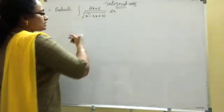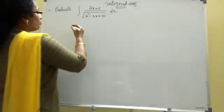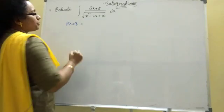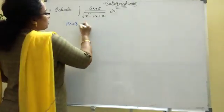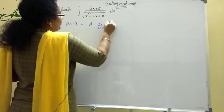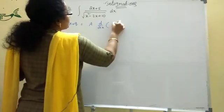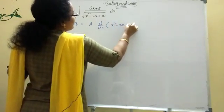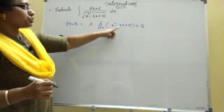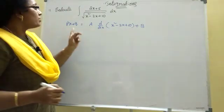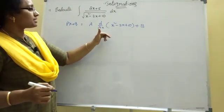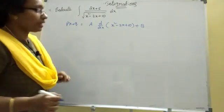Px plus q - this model is there. Then what is the formula? Px plus q equal to, first of all, numerator equal to formula. A into d by dx of denominator. This is the formula. I am taking root, don't take root. Okay, what is the formula here? Px plus q equal to A into d by dx of denominator plus B.